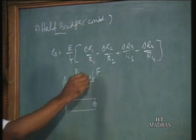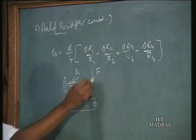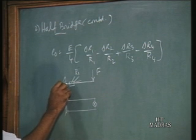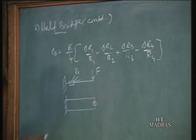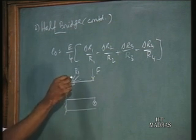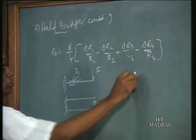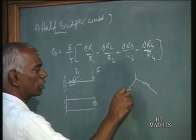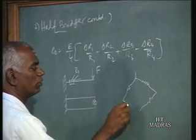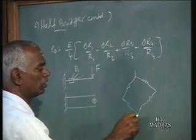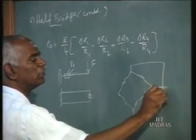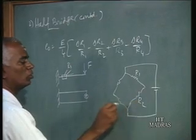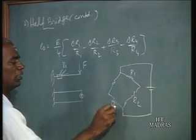For this type of downward loading, what we have at the top layer is tensile stress — so tensile strain. R1 will be under tensile strain. This is the bridge network — a pure resistance DC bridge network. So this is our R1, this R2, R3, R4.